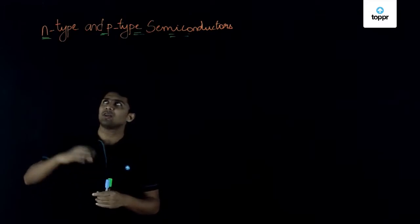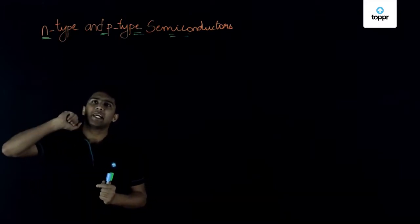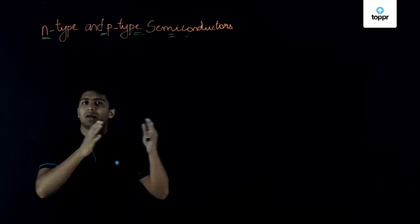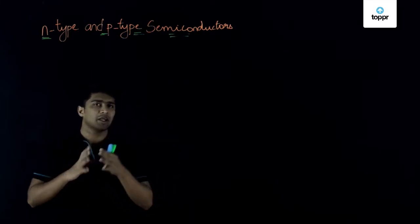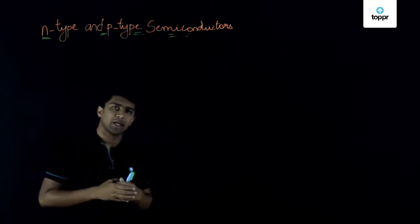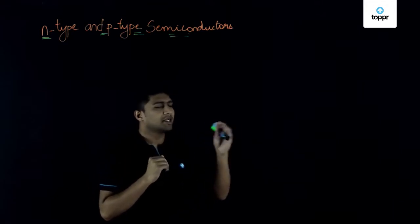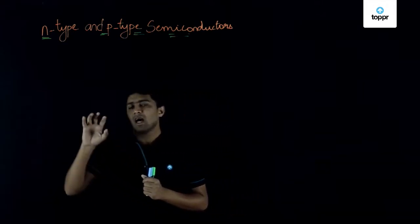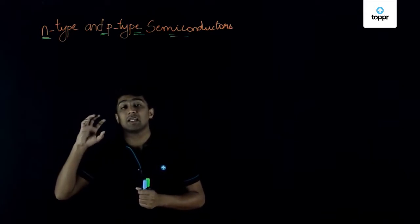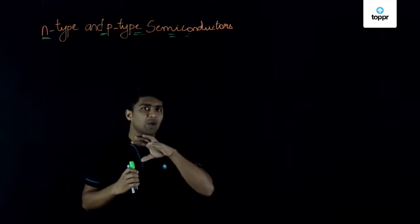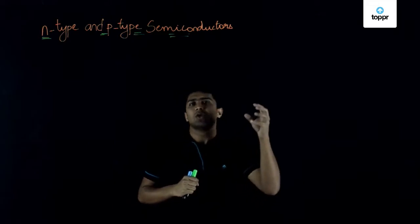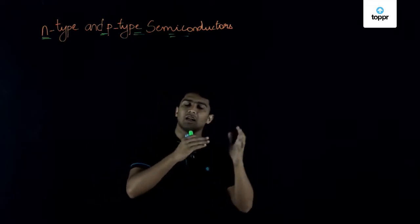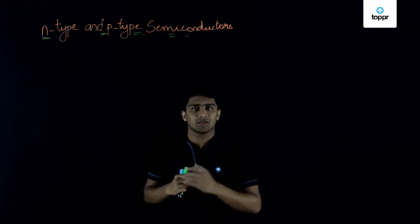Hello students, today we are going to discuss about n-type and p-type semiconductors. We have learned about semiconductors. We know that semiconductors can be classified into two main types: intrinsic semiconductor and extrinsic semiconductor. Intrinsic semiconductors are semiconductors in their purest form, and when we add some impurity to an intrinsic semiconductor to improve its conductivity, it becomes an extrinsic semiconductor.